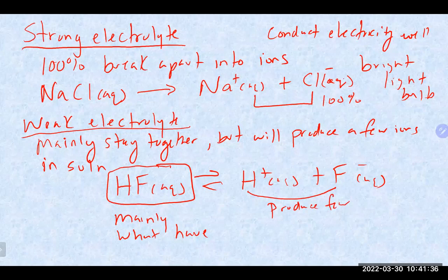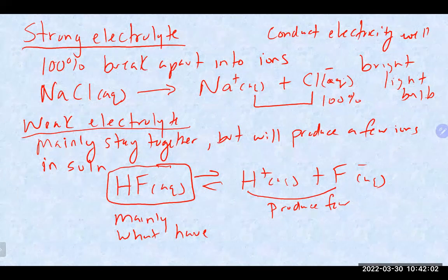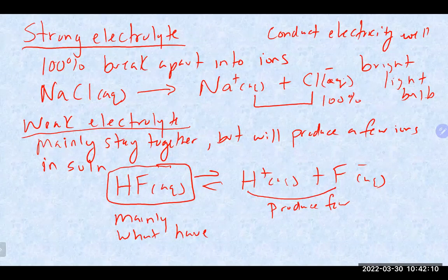Since a weak electrolyte produces a few ions in solution, it is still able to conduct electricity — but nowhere near as well as a strong electrolyte. Using the light bulb analogy, if you put the electrodes into a weak electrolyte solution, the light bulb would turn on but look very dim, almost like it's dying. It has enough ions to conduct electricity, but would be much dimmer than a strong electrolyte.